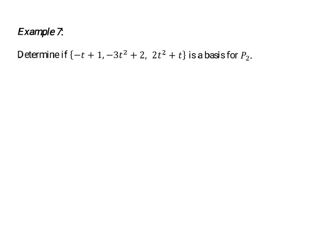In this example, we're asked to determine if this collection of polynomials is a basis for P2. P2 is the collection of all polynomials of degree 2 or lower. So P2 is the set of all polynomials of this form: something times t squared plus something times t to the first plus a constant.